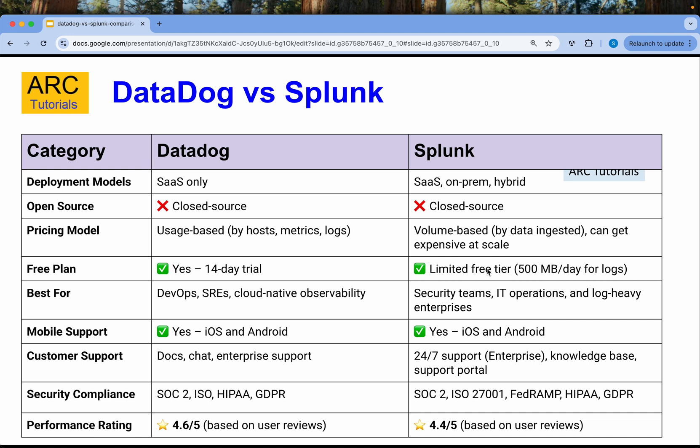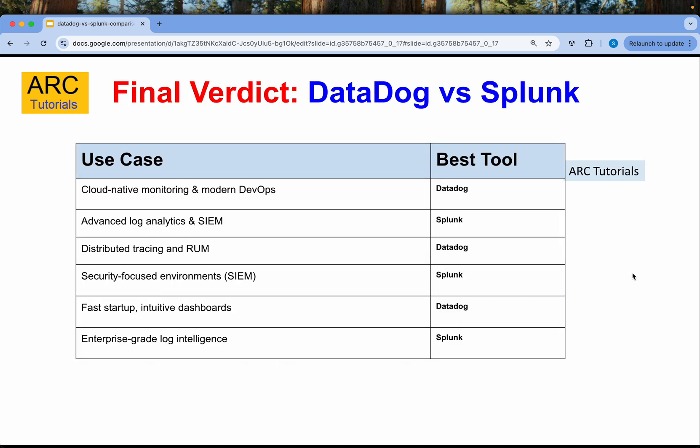For deployment models, Datadog is SaaS only, but Splunk can also be used on-premise with a hybrid model. Neither is open source. Datadog's pricing model is usage-based and Splunk's is volume-based. Datadog provides a free plan with a 14-day trial, while Splunk has a limited free trial up to 500 MB per day for logs. Both have mobile support and excellent customer support.